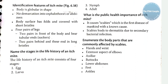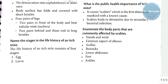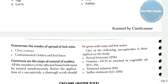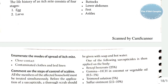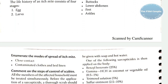Body parts commonly affected by scabies: hand and wrist, extensor aspect of the elbows, axilla, buttocks, lower abdomen, feet, and ankles. Mode of spread of the itch mite: close contact, contaminated clothes, and bed linen.